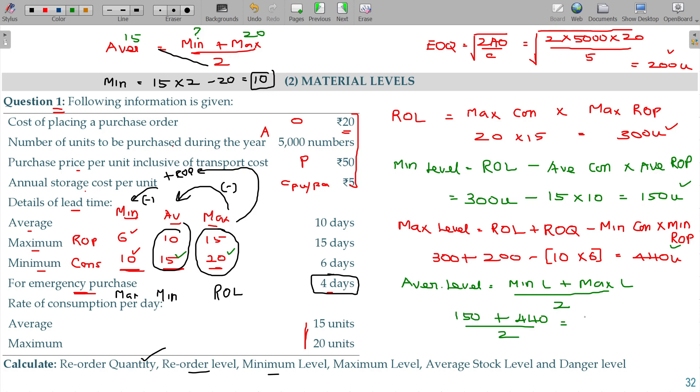Of course we have another formula. Minimum level plus half of reorder quantity. Minimum level 150, half of reorder quantity 100, so 250 will be the answer.